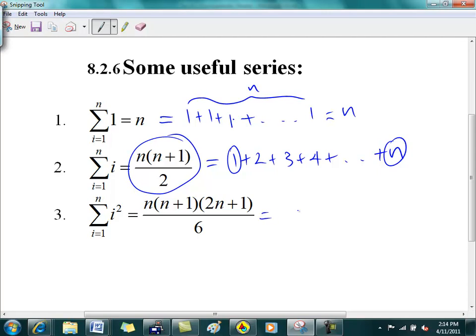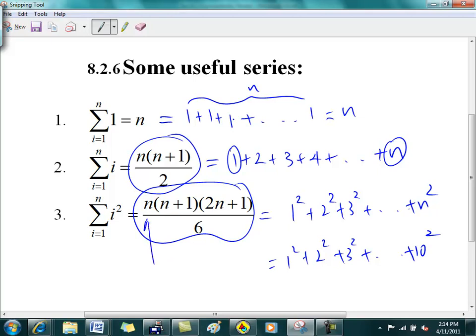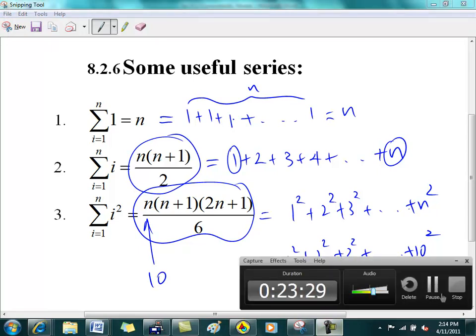So the last one is saying if you were to add 1 squared plus 2 squared plus 3 squared and so on, plus n squared, it's the same thing as this formula here. So this is what I want you to do. I want you to calculate this the old-fashioned way by plugging in numbers. Plug in numbers there, and then compare it with putting 10 for n in there. And see that you get the same answer.